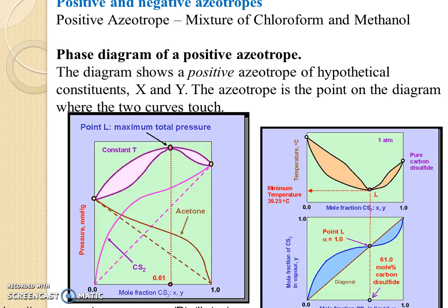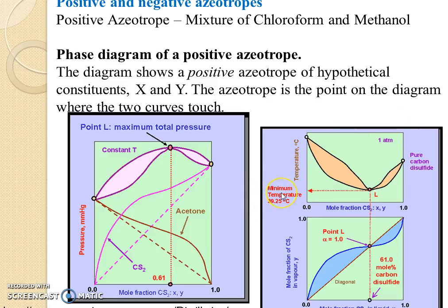This is the representation of the positive azeotrope. If you draw the graph between pressure and mole fractions, you will observe a curve like this. And if you draw the graph between mole fraction versus temperature, you will observe that the boiling point is less. That is why this type of azeotrope is also called a minimum boiling point azeotrope.